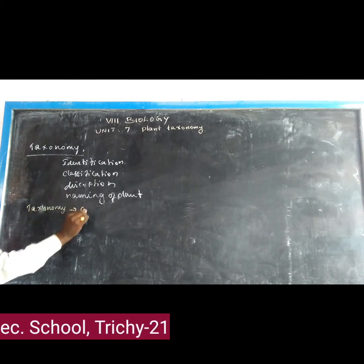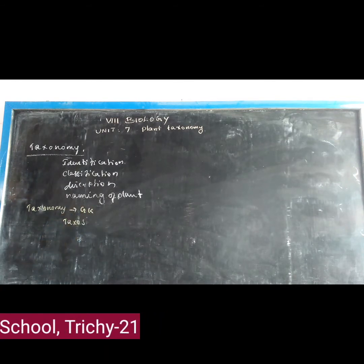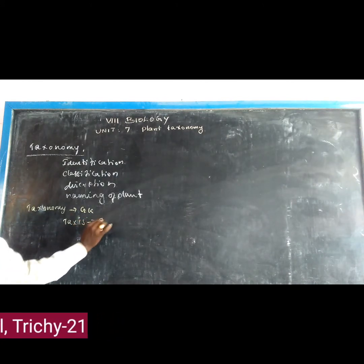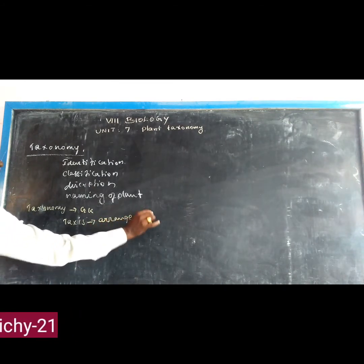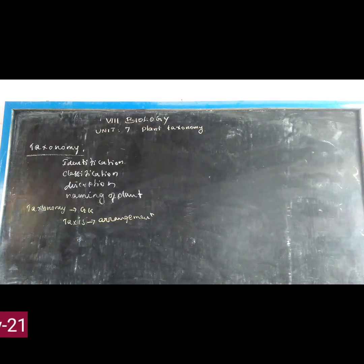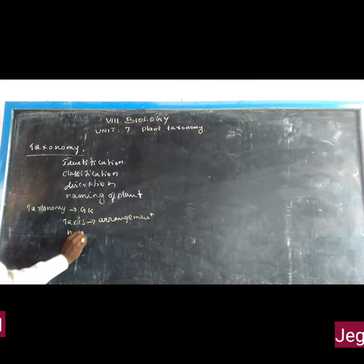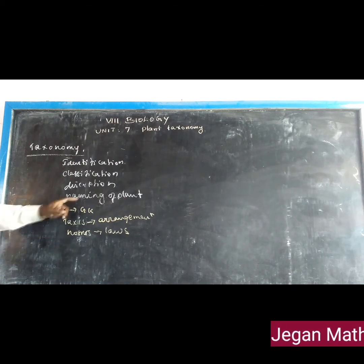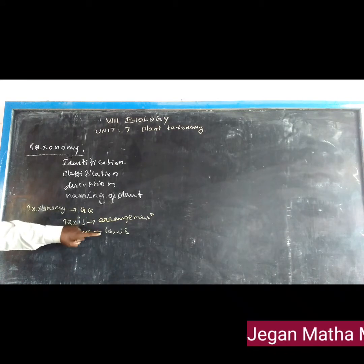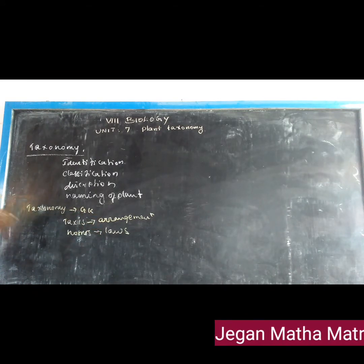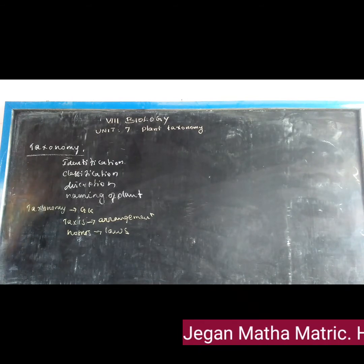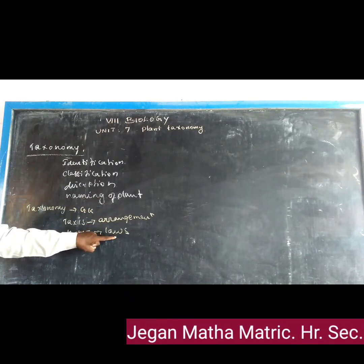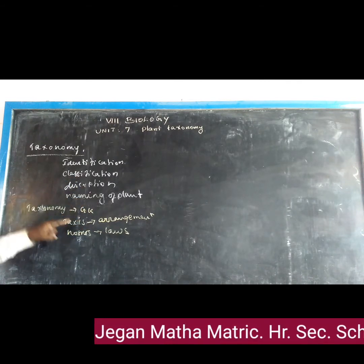Taxonomy is a Greek word combined from two Greek words. The first word is 'taxis,' which means arrangement, and the second word is 'nomos,' which means laws. So the plants are arranged according to the law — that is called taxonomy.